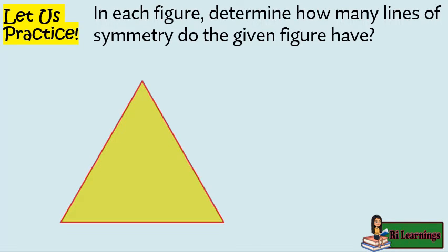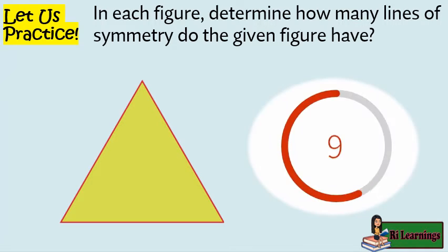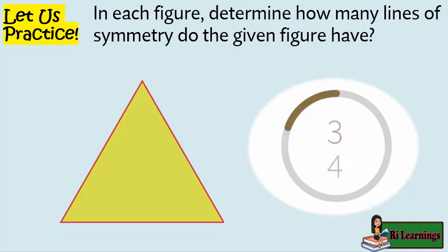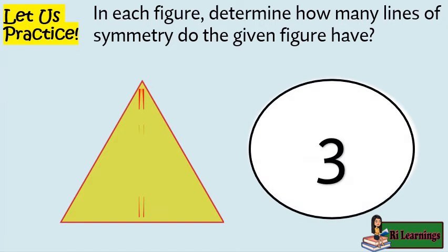How many lines of symmetry does the given figure have? I will give you 10 seconds to answer, and the timer starts now. And the answer is 3 — one vertical and two diagonal lines of symmetry.